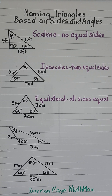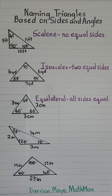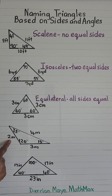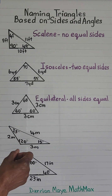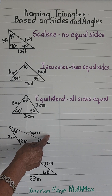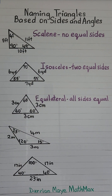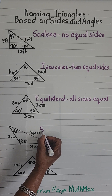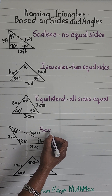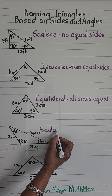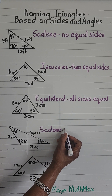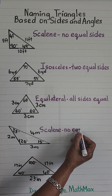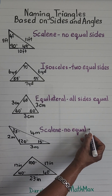Next we have four meters, three meters, and two meters — no sides equal. So this is another scalene triangle: no equal sides.